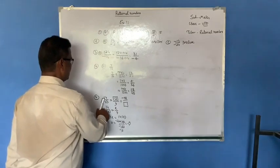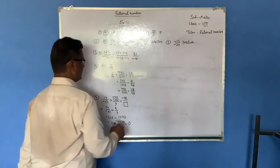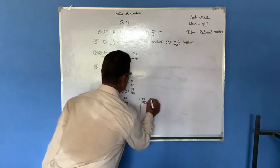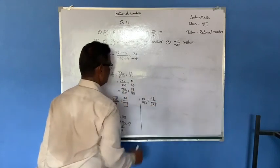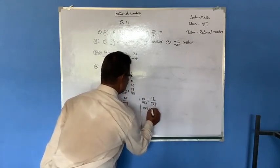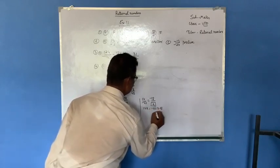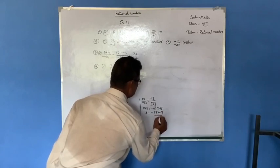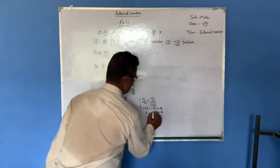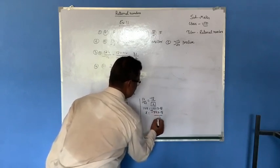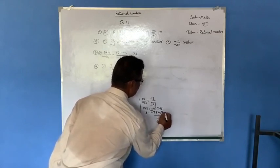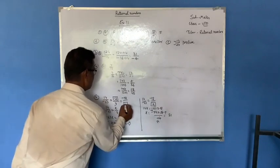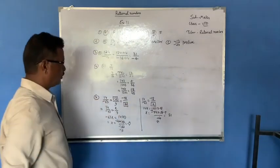For the second fill in the blank: 14 by minus 63 equals minus 18 by box. Let the box be x. Cross multiply: 14 times x equals minus 63 times minus 18. Dividing by 14: 63 divided by 7 is 9, and 18 divided by 2 is 9. So 9 times 9 is 81. The answer to fill in the box is 81.